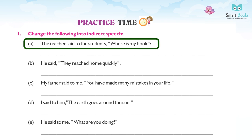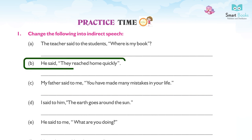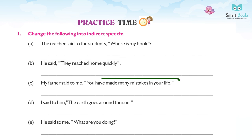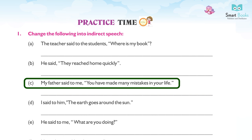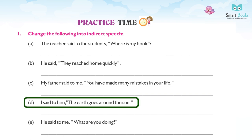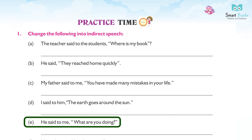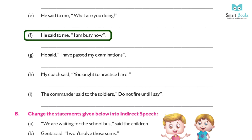Practice time — Change the following into indirect speech: (a) 'Where is my book?' → The teacher asked the student where his book was. (b) He said, 'They reached home quickly.' → He said that they reached home quickly. (c) My father said to me, 'You have made many mistakes in your life.' → I was told by my father that I had made many mistakes in my life. (d) I said to him, 'The earth goes around the sun.' → I said to him that the earth goes around the sun. (e) He said to me, 'What are you doing?' → He asked me what I was doing. (f) He said to me, 'I am busy now.' → He told me that he was busy then.